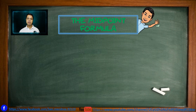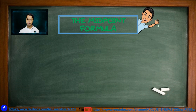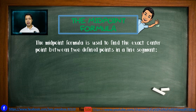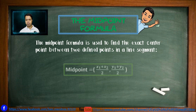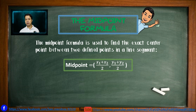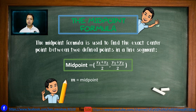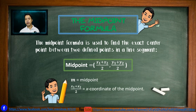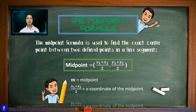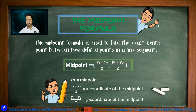Another concept we are going to apply is the midpoint formula. The midpoint formula is used to find the exact center between two defined points in a line segment, and it is given by: midpoint M equals ((x₁ plus x₂) over 2, (y₁ plus y₂) over 2). This will be the coordinate of the midpoint, where M refers to the midpoint, (x₁ plus x₂)/2 is the x-coordinate, and (y₁ plus y₂)/2 is the y-coordinate.